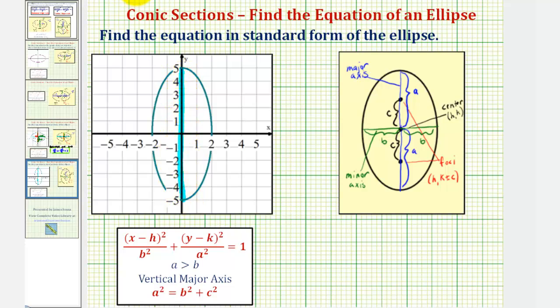And we have a horizontal minor axis, which is this axis here. Remember, the major axis is always the longer of the two axes.